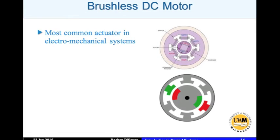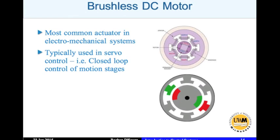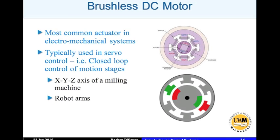The brushless DC motor is the most common actuator in electromechanical systems, typically used in servo control and closed-loop control of motion stages. For example, in a milling machine they use a brushless DC motor to run the stages, and also in robot arms. Essentially, the construction of the brushless DC motor is such that you have a stator with coils and a rotor attached to a very powerful electromagnet. Electronic circuitry keeps changing the polarity of the coils depending on the location of the rotor magnet, and this makes it rotate.